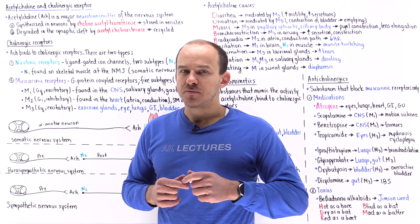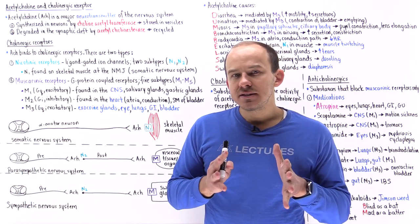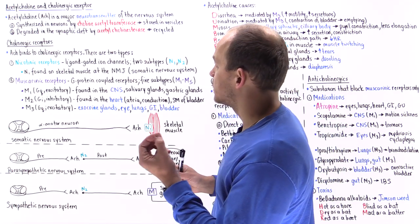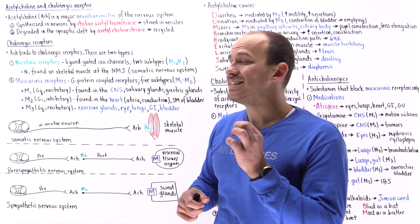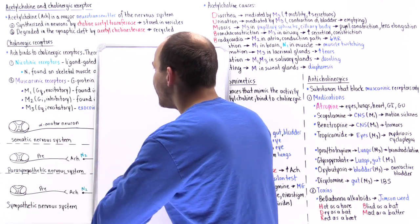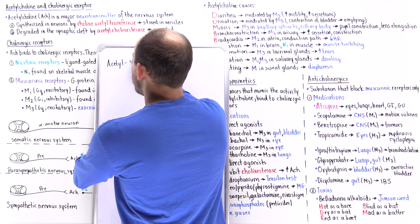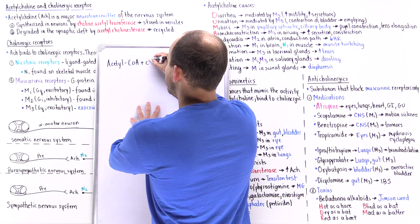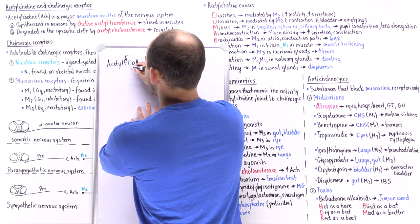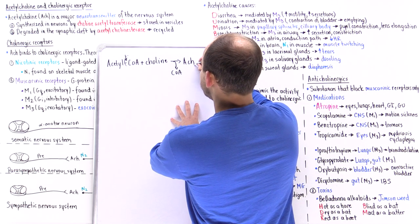Acetylcholine is one of the major neurotransmitters used by the central nervous system and the peripheral nervous system. We synthesize acetylcholine in our neurons using an enzyme called choline acetyltransferase. What choline acetyltransferase does is it combines a molecule of acetylcoenzyme A with choline. This is a high-energy bond, so we break the bond, release the coenzyme A, and form acetylcholine, ACh.